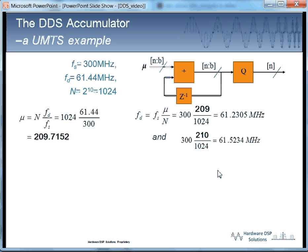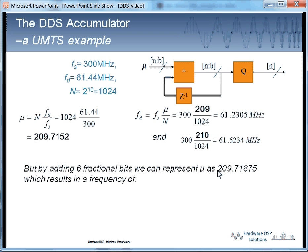What happens if we add some fractional, if we maintain this fractional part? So, if we add six fractional bits to the accumulator, we see we can achieve 209.71875, which results in a frequency of 61.44 megahertz. So, by adding those fractional bits, we are able to improve our frequency precision.